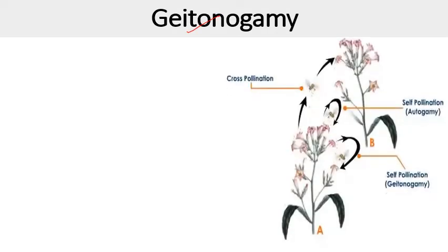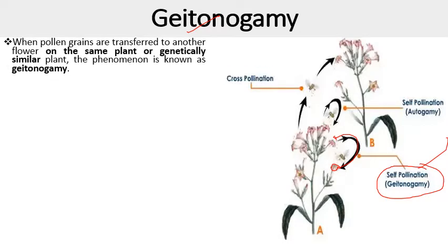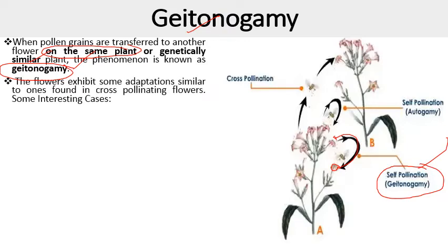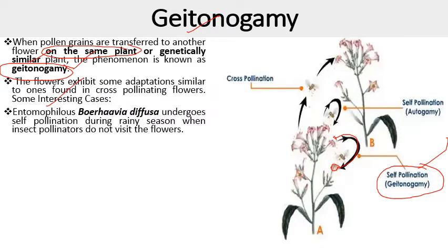Next is geitonogamy — a type of self-pollination in which pollen from one flower is transferred to the stigma of another flower on the same plant. Pollen grains transferred to another flower on the same plant or a genetically similar plant — this phenomenon is known as geitonogamy. The flowers exhibit some adaptations similar to those found in cross-pollination flowers. An interesting case is Boerhavia diffusa, which undergoes self-pollination during rainy seasons when insect pollinators do not visit the flowers.